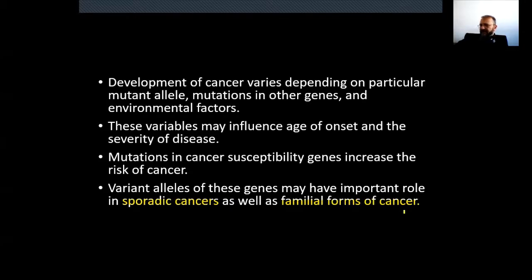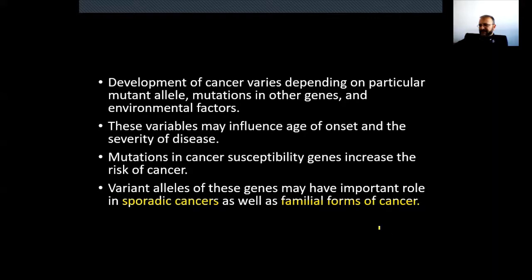If a person has an inherited form of cancer — meaning the cause is a germline mutation inherited from parents — we call this group familial cancers or inherited cancers. But if a patient starts life with totally normal alleles of all cancer genes, and during their life a mutation hits a cancer gene in a single cell and triggers cancer, that group of cancers is called sporadic cancers.